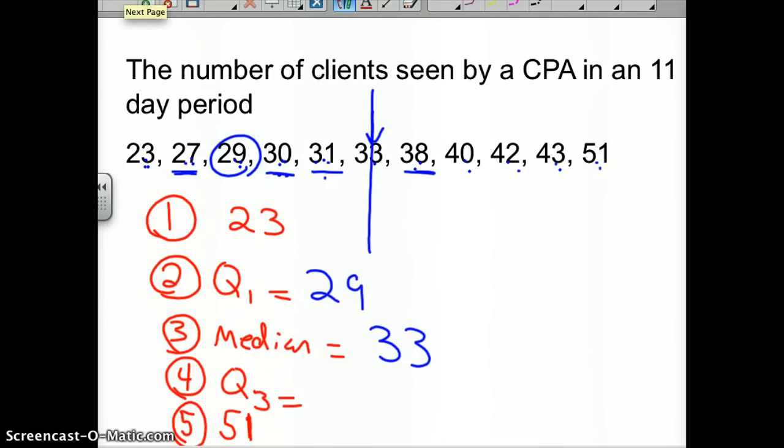Your third quartile is the middle of your second half of your data. Again, there's five pieces of data here, so you count up two and back two. 42 would be your third quartile. There's your five-number summary.